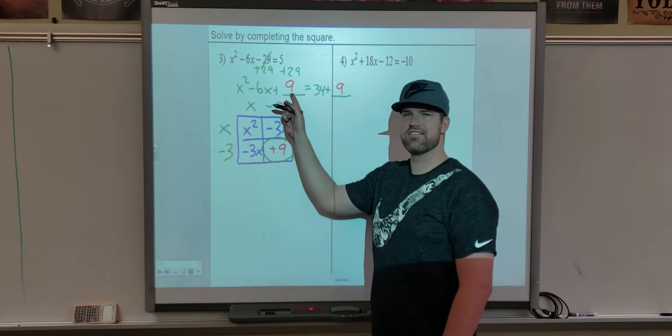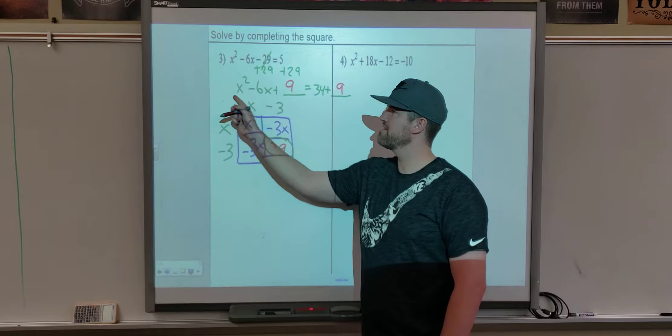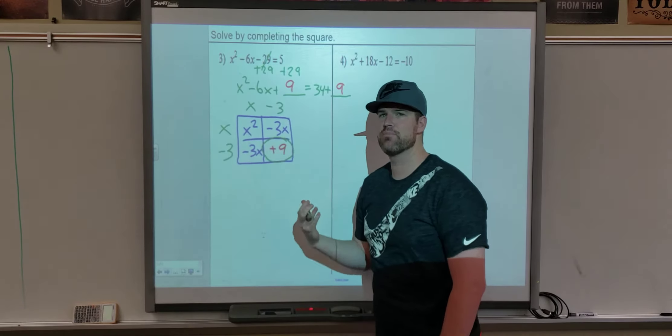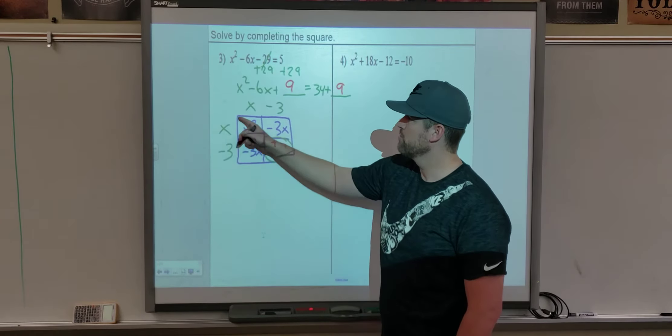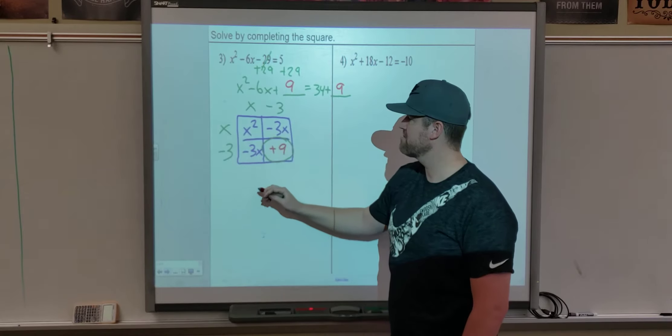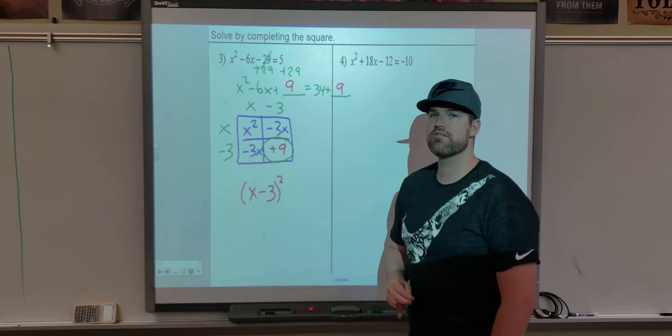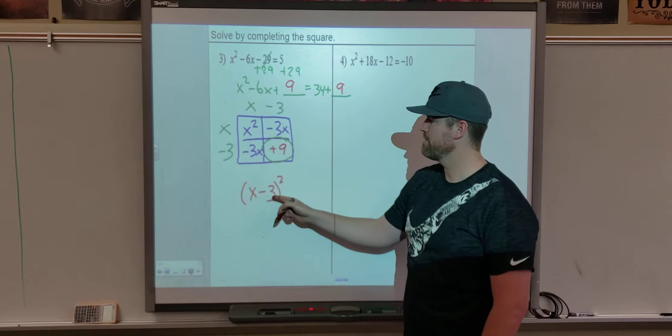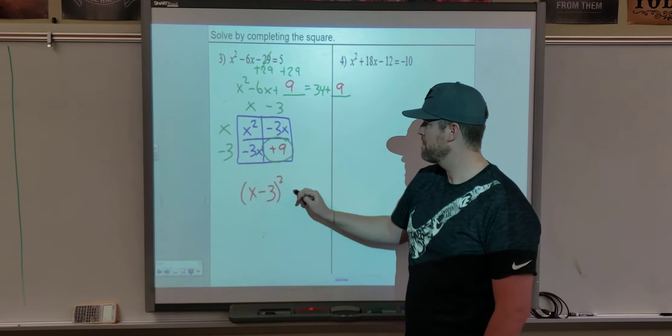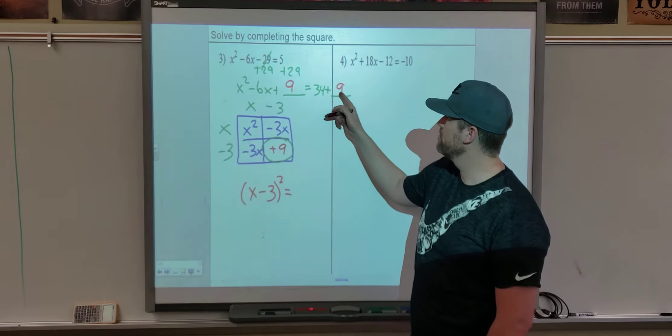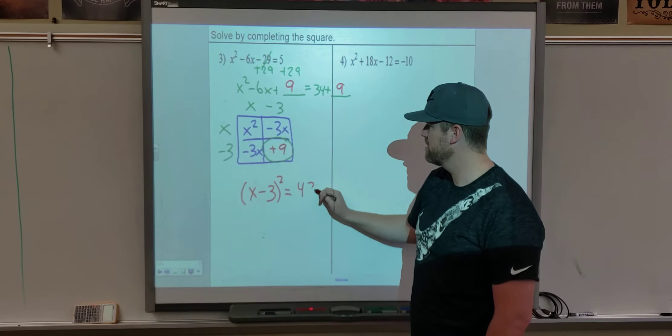Again, by finding this number here, we found a number that makes this trinomial factor into a perfect square, which this is the perfect square that it factors to. So it factored to x minus 3 times x minus 3, also known as x minus 3 squared. The right side is 34 plus 9, so 43.